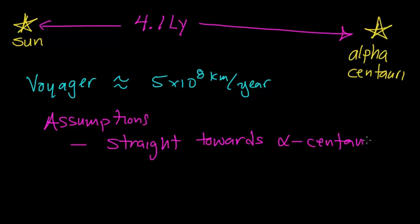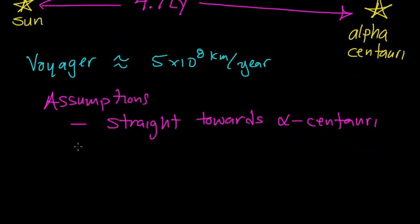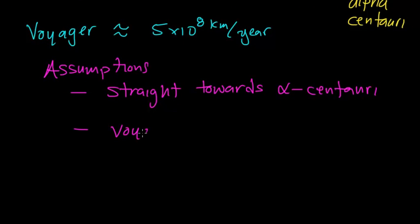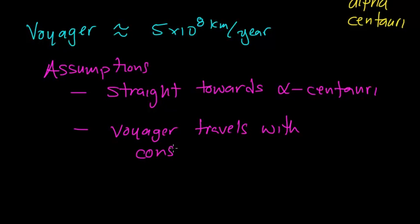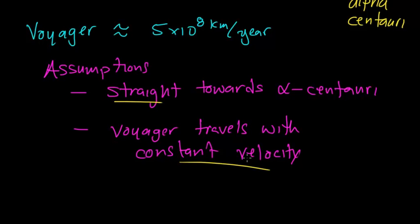In fact, we know that this is not actually the case. We're just using this as a hypothetical to calculate the time it would take to travel to the nearest star if we were so inclined to travel to it. The second assumption we're going to make is that the Voyager is traveling with constant velocity. We need both assumptions — traveling in a straight line towards Alpha Centauri and traveling with constant velocity — for this calculation to be actually valid.